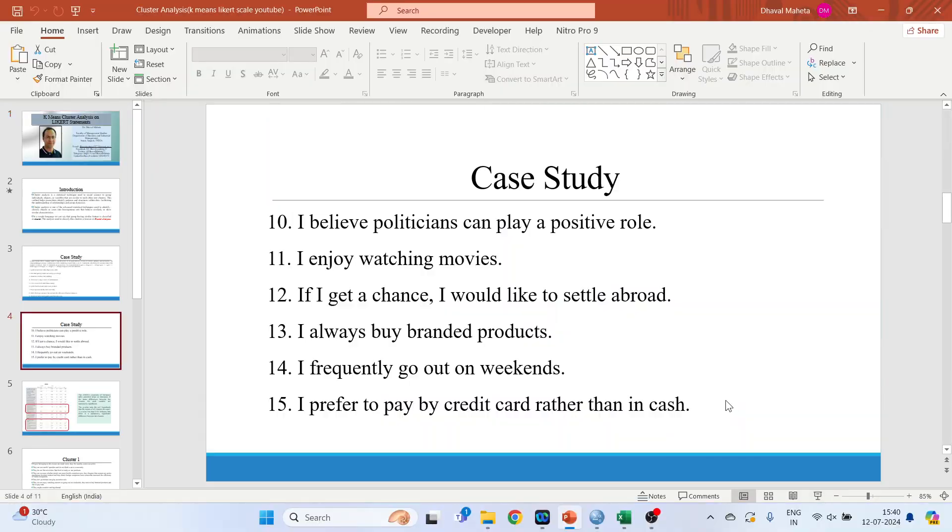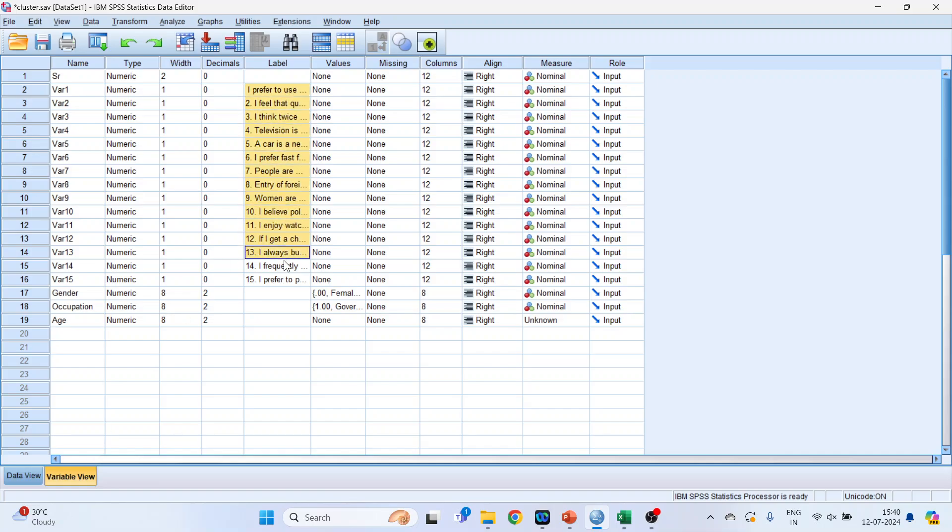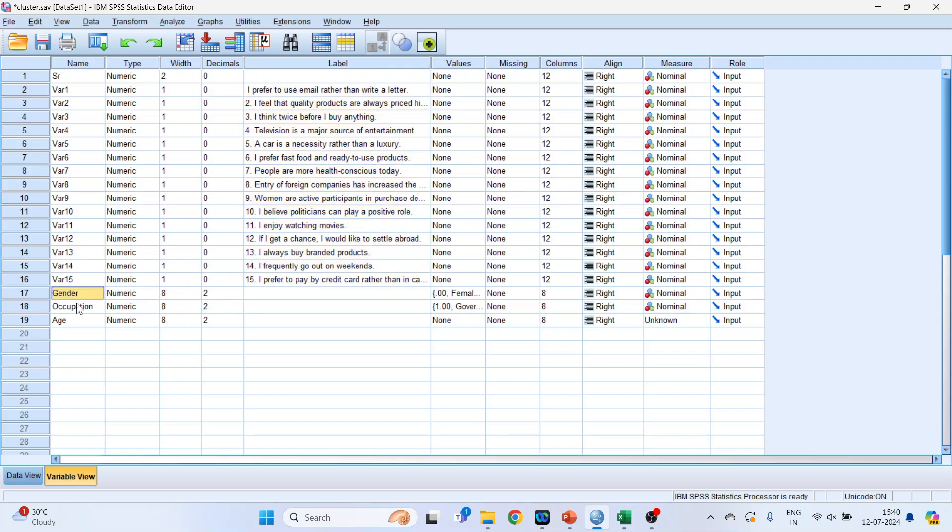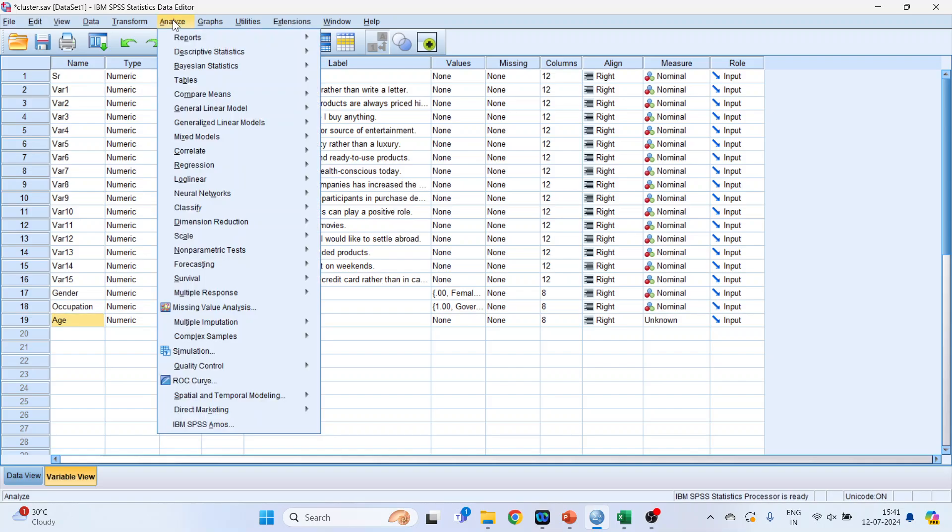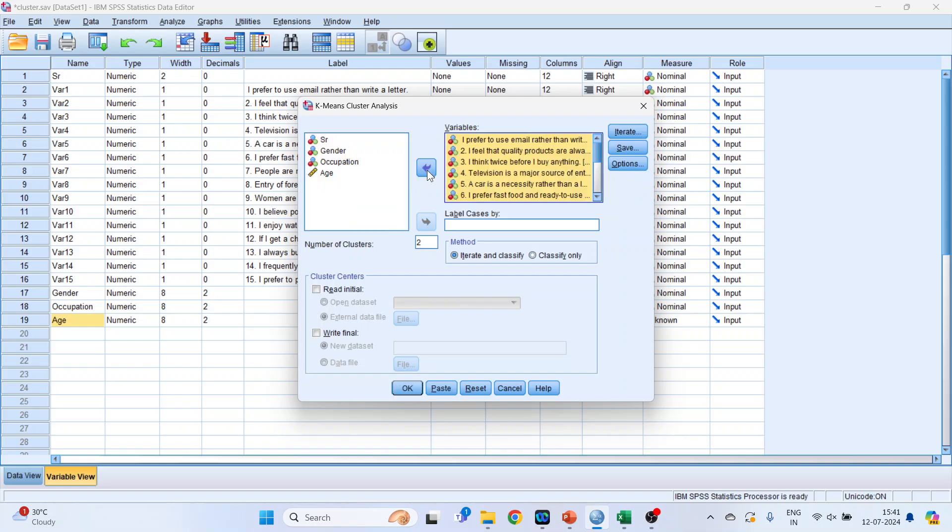So we have collected the data in SPSS. You can see here, these are the statements, 15 statements. The demographic variables are gender, occupation and age. Now we will go and analyze, classify, K means clustering and transfer all the statements in variables. You will not transfer demographic variable. Only the statements which are on Likert scale. Transfer it.